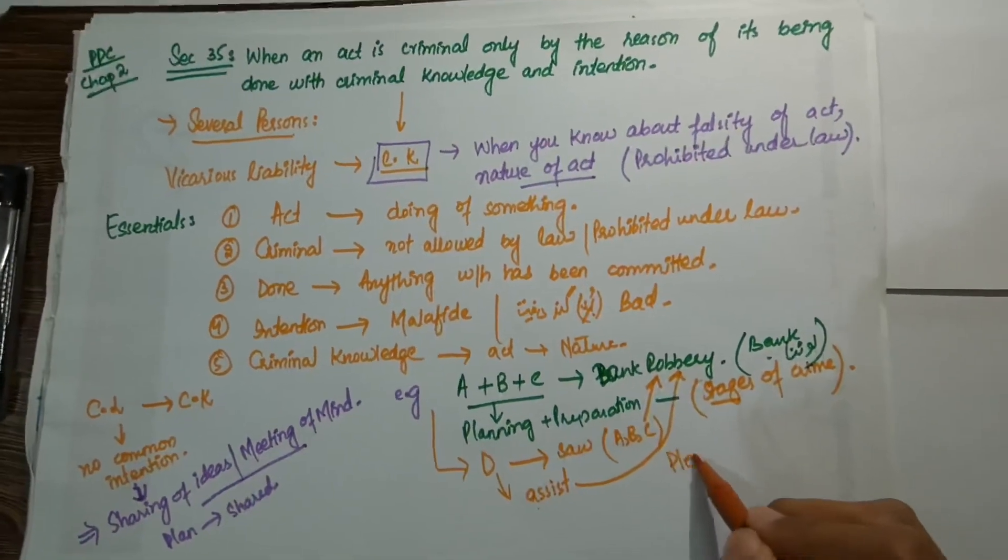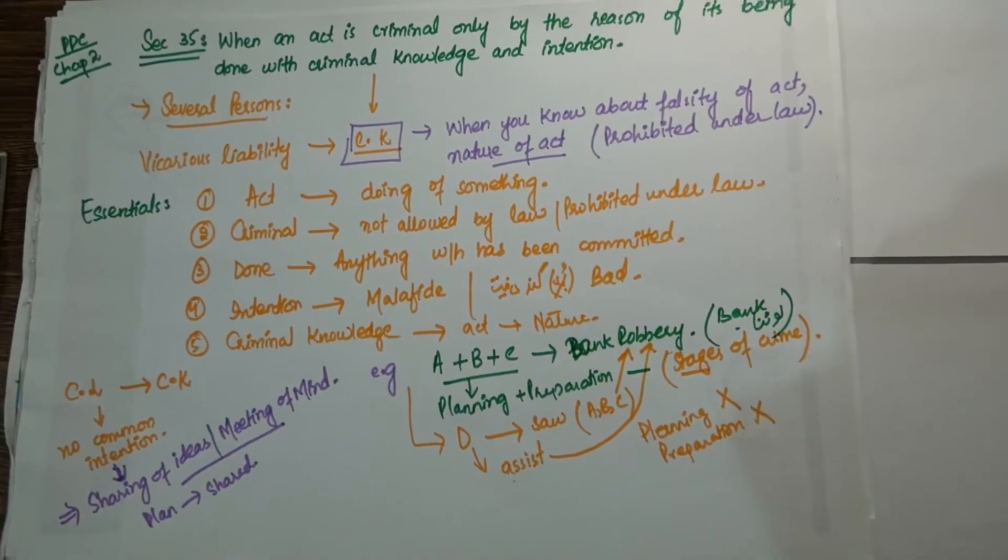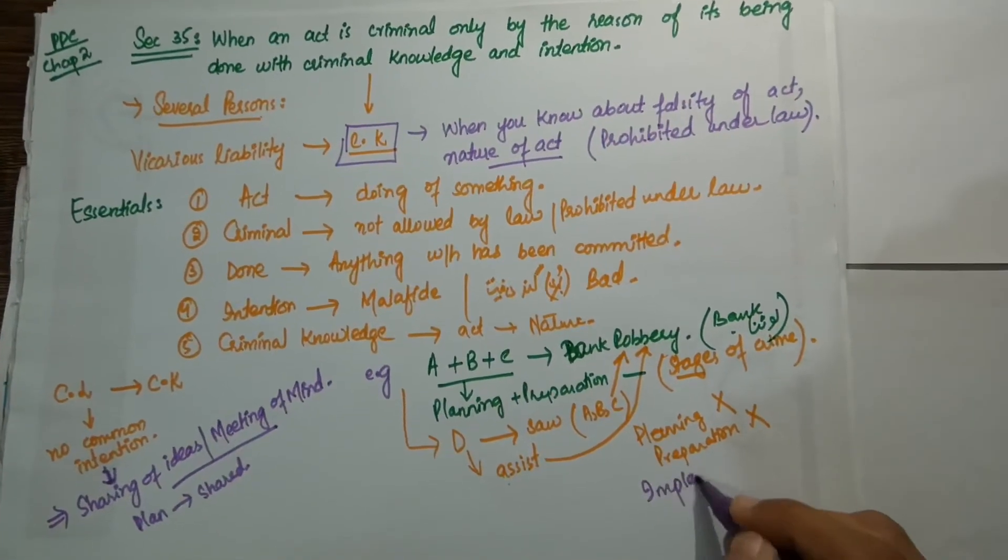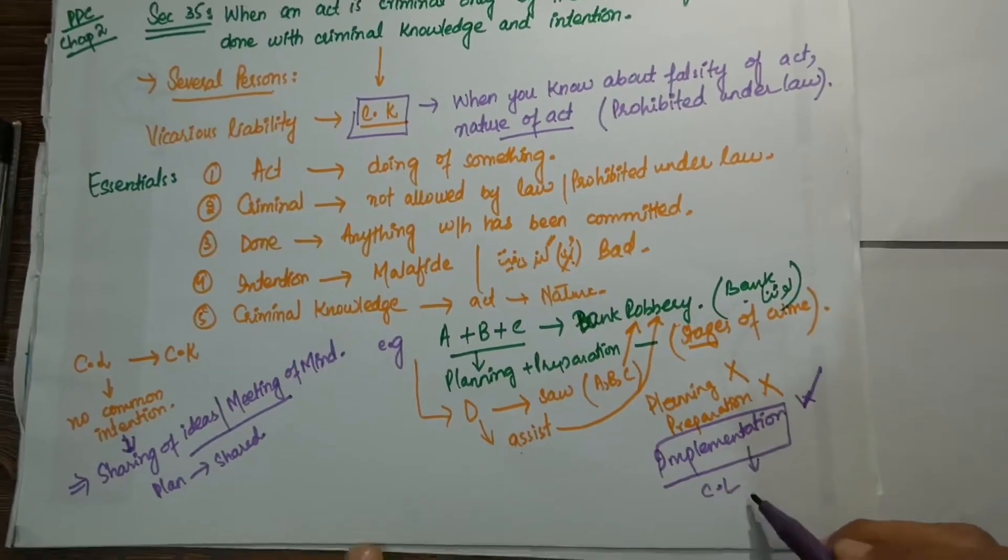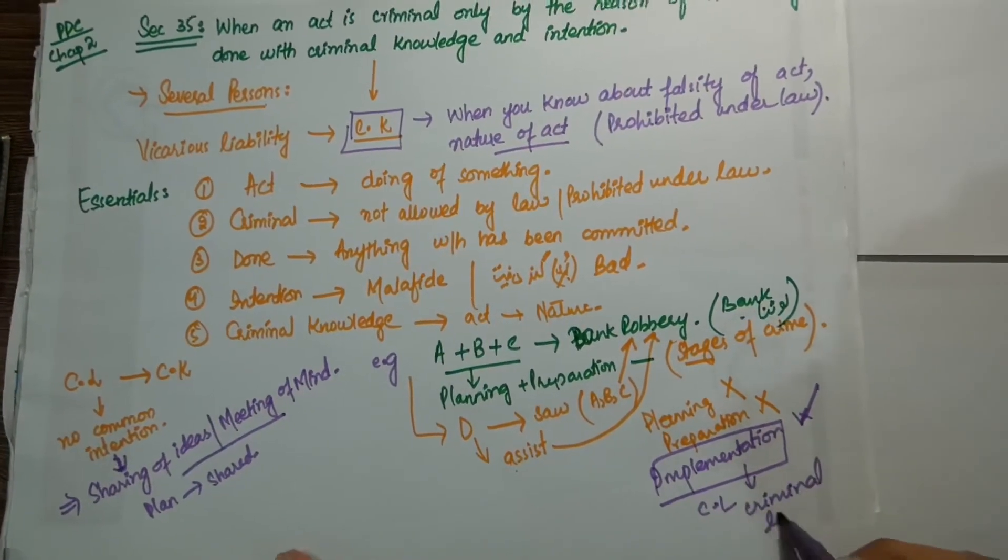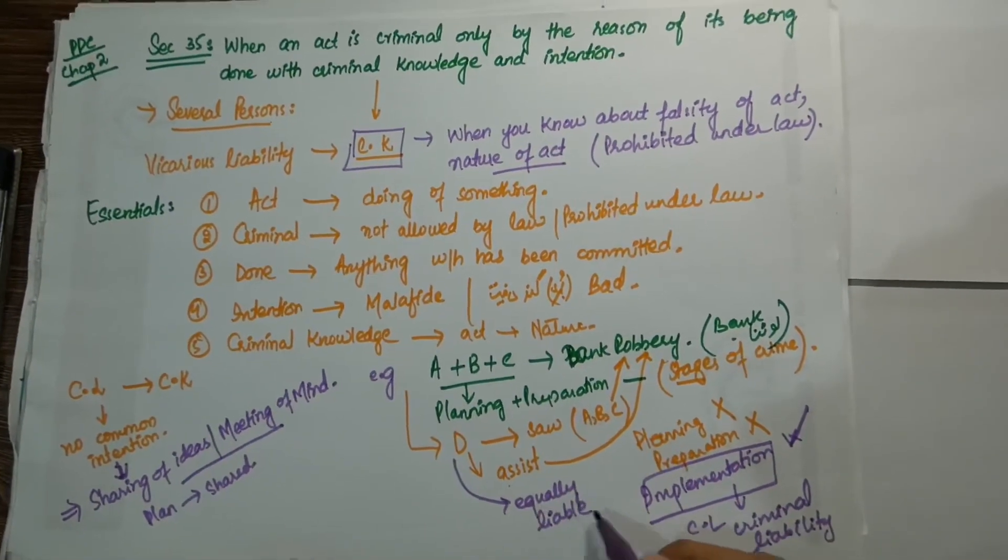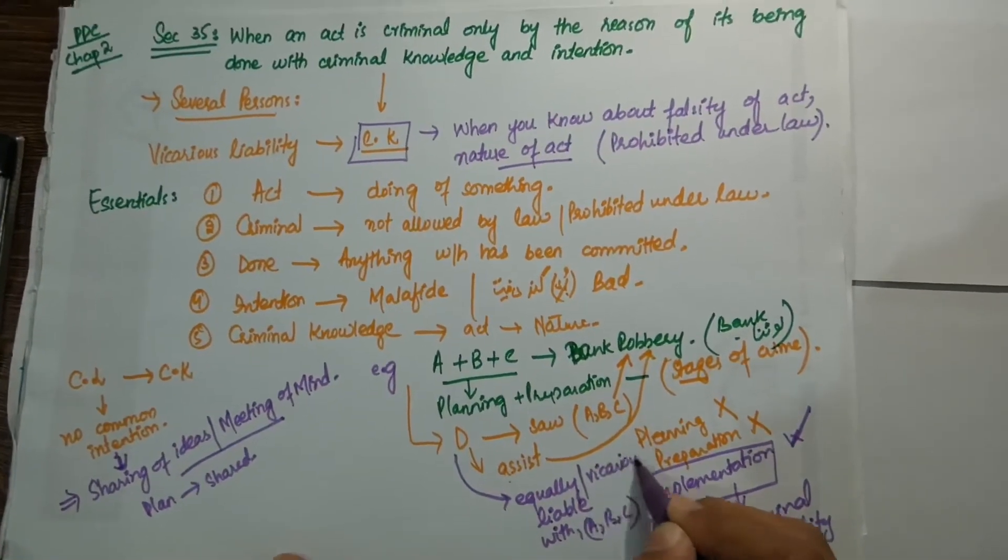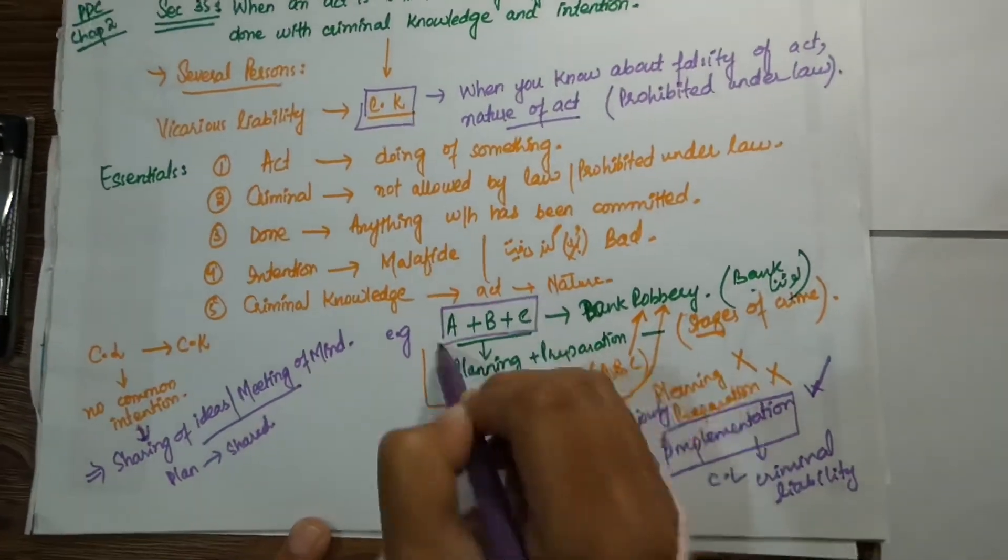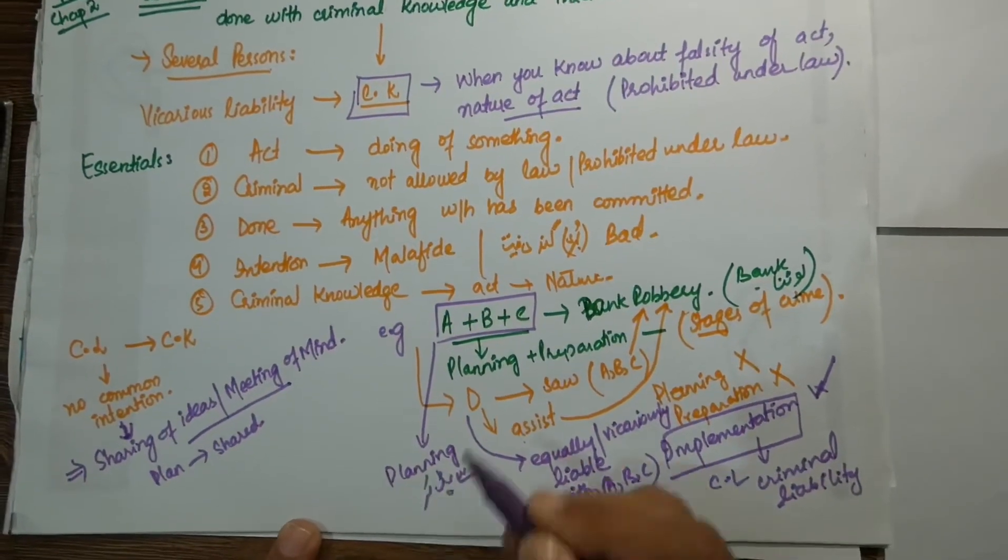Now three men have prepared for the bank robbery. D, a third person, sees that A, B, and C are going to do bank robbery. So D assists A, B, and C to bank robbery. Though he was not a part of planning, he was not a part of preparation, but he was a part of implementation which is essential in our stages of crime. So D will be equally and vicariously liable along with A, B, and C.